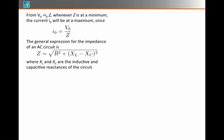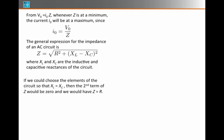If you remember, the impedance for the circuit is the square root of R squared plus XL minus XC squared. These are the inductive and capacitive reactances. If we could choose the elements of the circuit so that XL equals XC, then the second term in impedance goes away, and Z would be just equal to R. That's the smallest possible value we can get for impedance of a circuit.